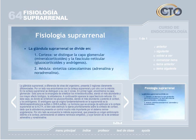A continuación aparece la capa fascículo-reticular, donde se sintetizan los glucocorticoides, siendo el más abundante y potente el cortisol, y los andrógenos. El andrógeno que se origina fundamentalmente en la suprarrenal es la dehidroepiandrosterona sulfato o DHEA sulfato. La hormona encargada de estimular la corteza suprarrenal es la ACTH, que ejerce su estímulo prioritariamente sobre la síntesis de cortisol, dado que la aldosterona presenta un control más importante por el sistema renina-angiotensina.